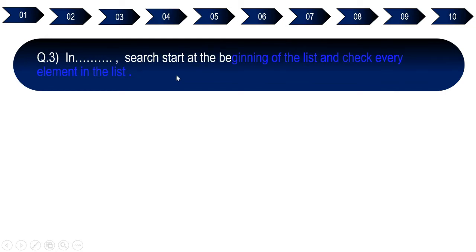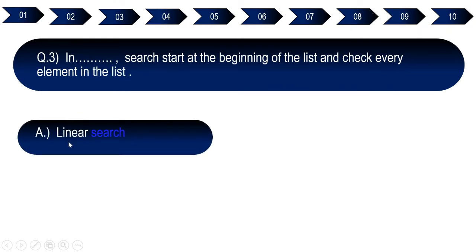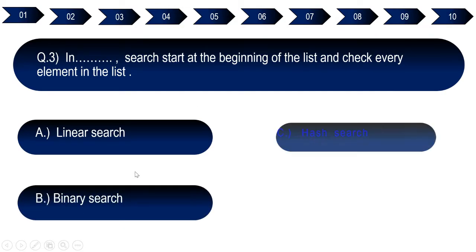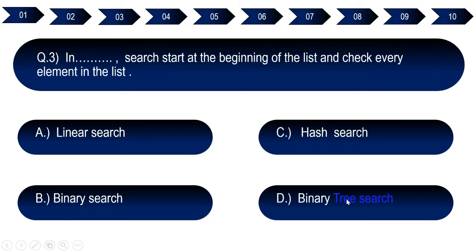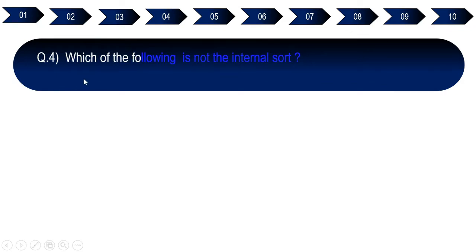Question number three: In dash search, we start at the beginning of the list and check every element in the list. Option A: linear search. Option B: binary search. Option C: hash search. Option D: binary tree search. The right answer for question number three is linear search, option A.